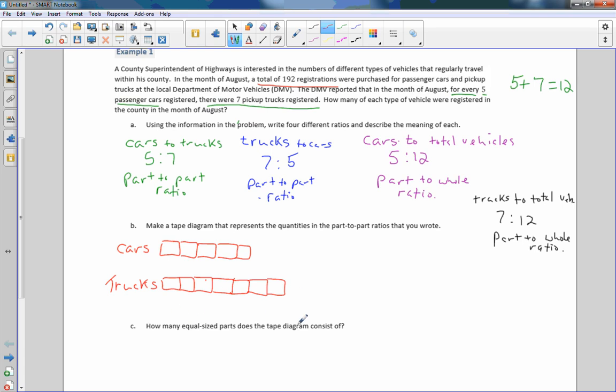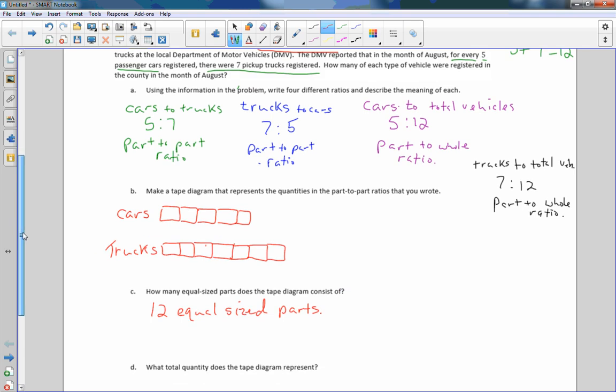Part C says, how many equal sized parts does the tape diagram consist of? One, two, three, four, five, six, seven, eight, nine, 10, 11, 12. So there are 12 equal sized parts. Mine don't look equal, but it's hard to write with this pen. So just assume they are. 12 equal sized parts.